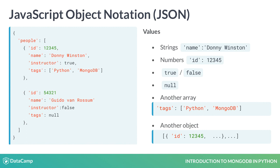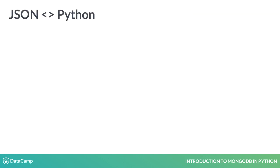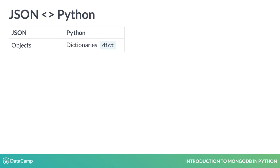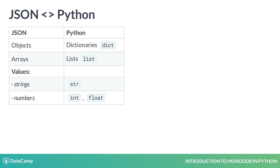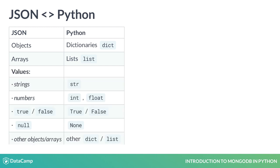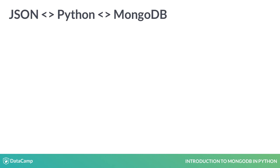That's it. These JSON data types have equivalents in Python. JSON objects are like Python dictionaries with string type keys. Arrays are like Python lists. And the values I mentioned also map to Python. For example, null in JSON maps to None in Python. Now, how are these JSON and Python types expressed in MongoDB?